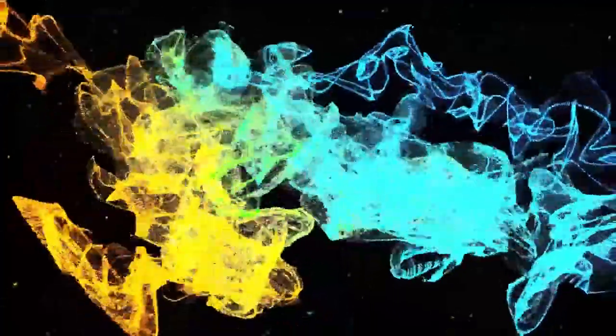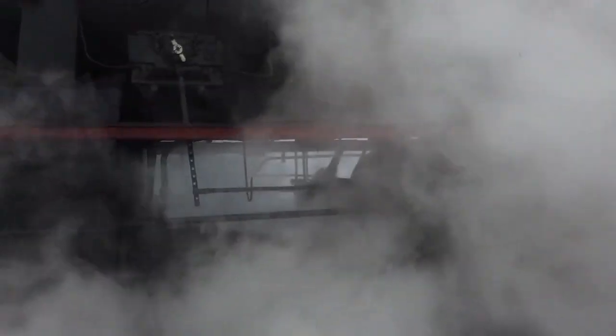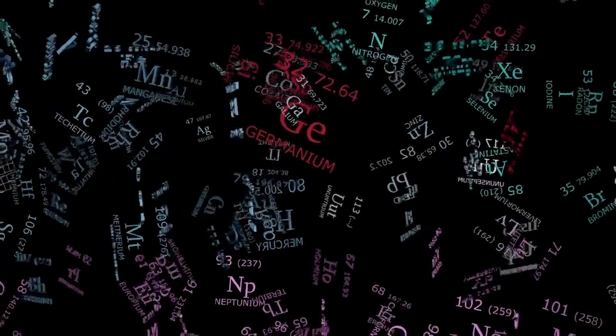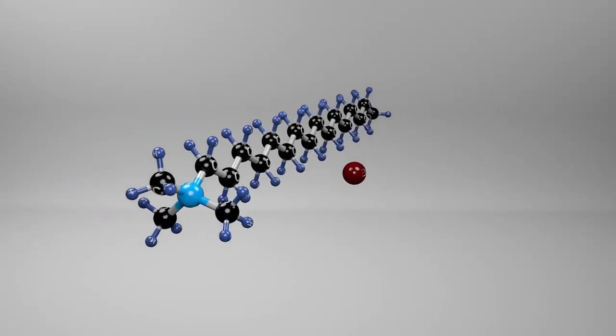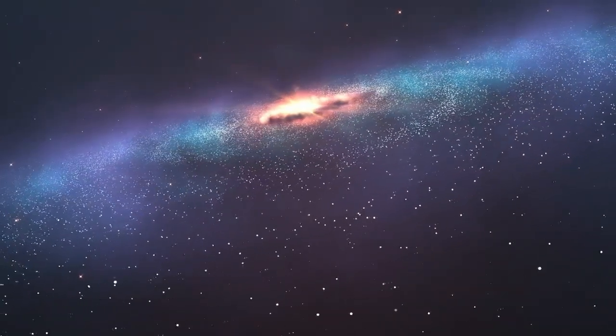To grasp why this is so baffling, you need to understand how galaxies are supposed to evolve. In the beginning, matter was thin and uneven, slowly pulled together by gravity into clouds that collapsed into stars. Over eons, stars grouped into galaxies. But Webb's images suggested this entire process had already happened far too quickly. That galaxy hadn't just taken shape, it had thrived. The laws of astrophysics didn't allow this. It was like finding a fully grown redwood tree sprouting from freshly planted soil.